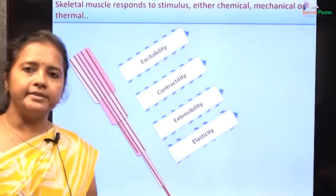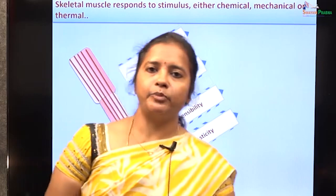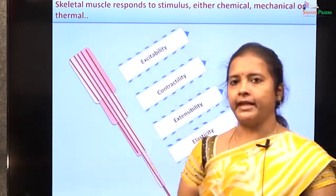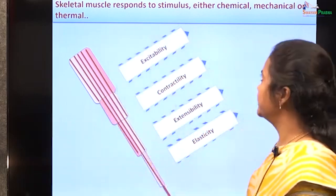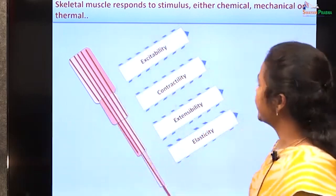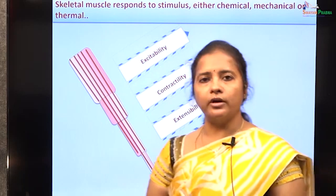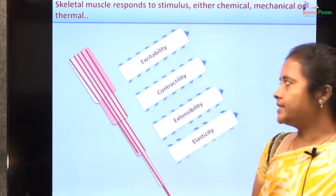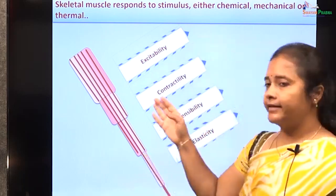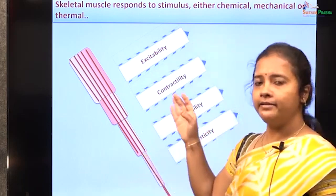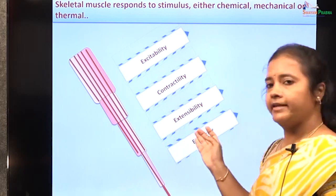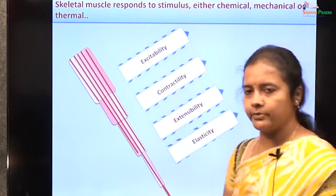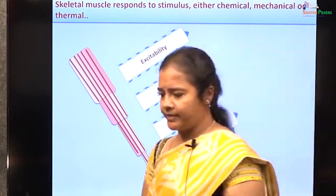The skeletal muscles respond to a stimulus — either a chemical stimulus, a mechanical stimulus, or a thermal stimulus. The skeletal muscles are excitable, they can contract, and they have the property of extensibility as well as elasticity.